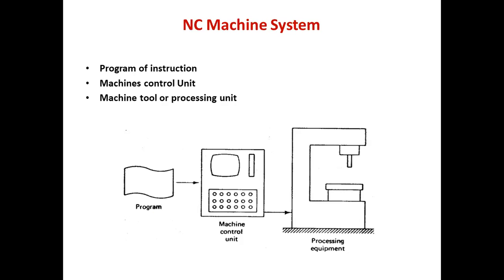The second method of input is by means of a direct link with the computer, called direct numerical control or DNC. The machine control unit is the basic component of the NC system. It consists of electronics and hardware that read and interpret the program of instructions and convert it into mechanical action of the machine tool. The machine control unit reads the program and executes it, controlling the tool movement and the work piece movement on the table.